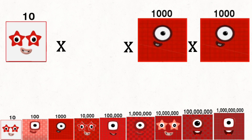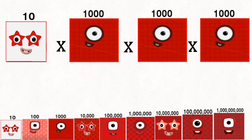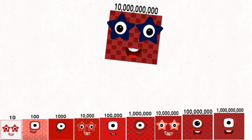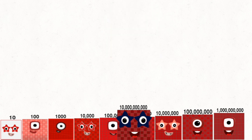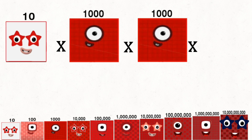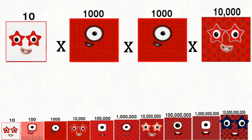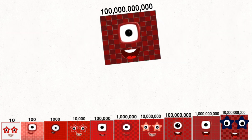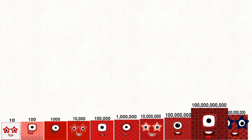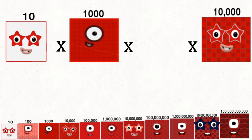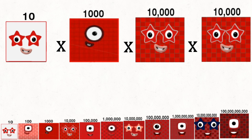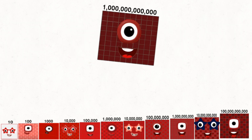Ten times one thousand times one thousand times one thousand equals ten billion. Ten times one thousand times one thousand times ten thousand equals one hundred billion. Ten times one thousand times ten thousand times ten thousand equals one trillion.